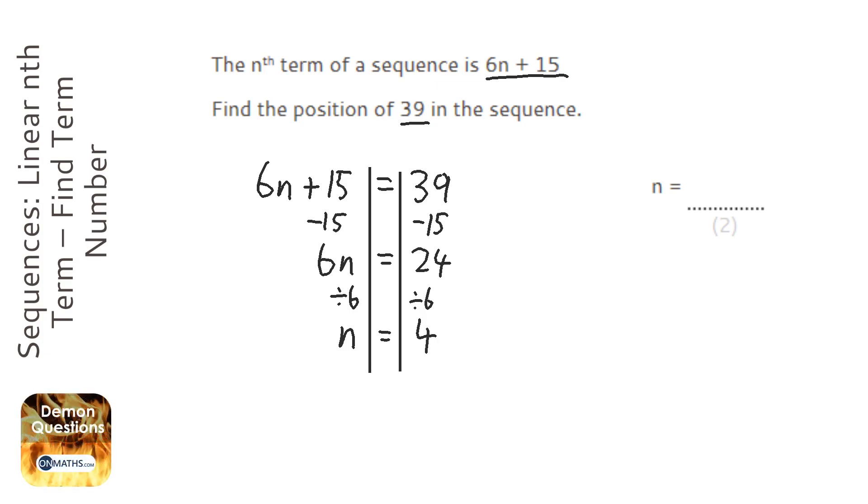Now if you wrote out the sequence, you could put in n equals 1. So 6 plus 15 is going to be 21, and then you're just going to add 6 each time.